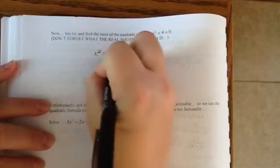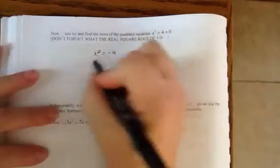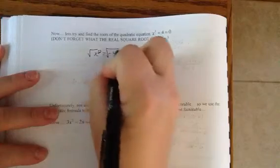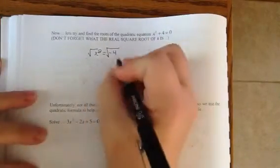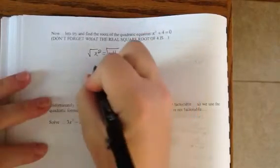So x squared is going to equal negative 4, and then you're going to square root both sides. Because you put the square root on the paper, it wasn't there to start with, you have to take care of the fact that the square root of 4 is plus or minus 2.